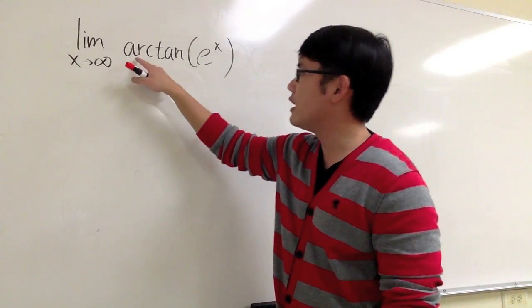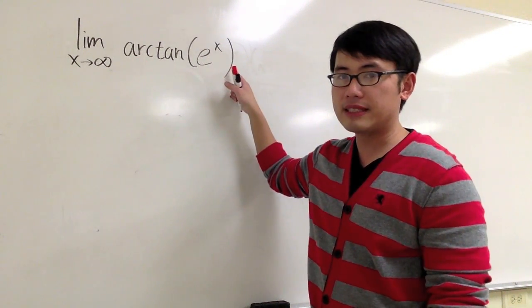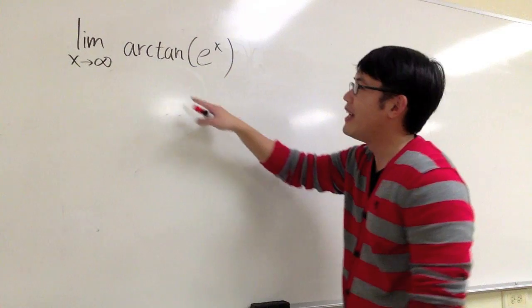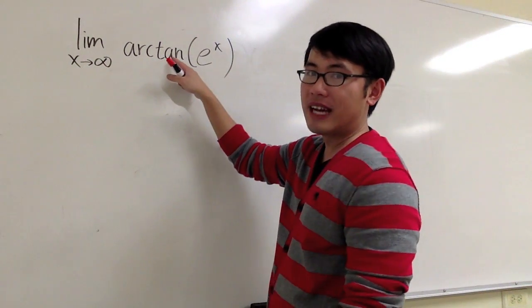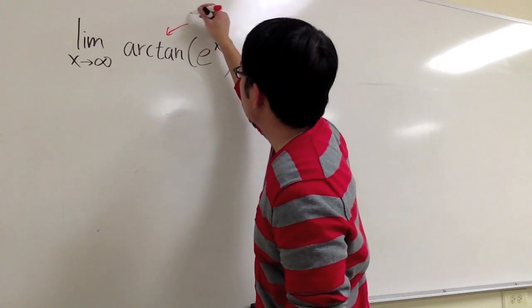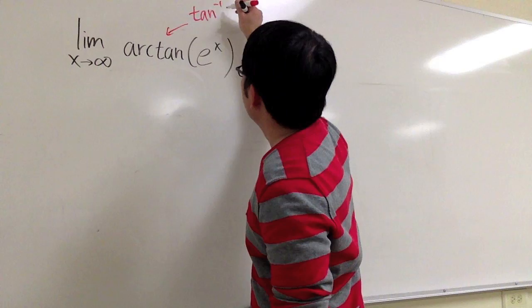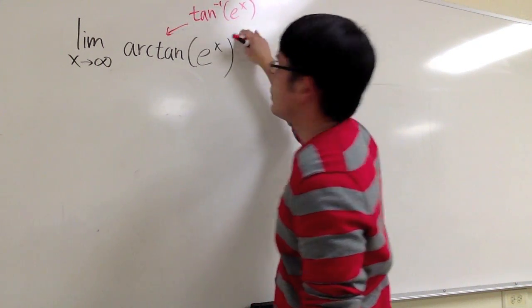The limit when x approaches infinity of arctangent of e to the x. And let me make a note right here. Arctangent is another way to write the inverse tangent. This is the same as the inverse tangent of e to the x.